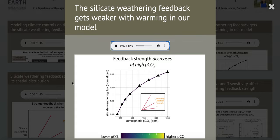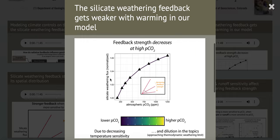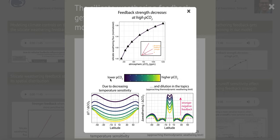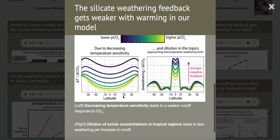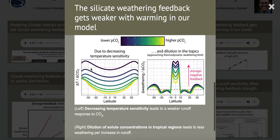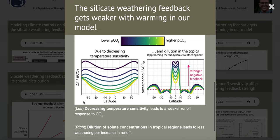Let's look at a very simple case where we increase CO2 in our model and look at how silicate weathering fluxes change. In the top panel, the curve of silicate weathering flux versus CO2 gets shallower at higher levels of CO2, indicating that the strength of the silicate weathering feedback decreases as CO2 increases. We can deconvolve this into two contributions. First, as CO2 increases, the change in temperature per change in CO2 decreases — the yellow line is lower than the dark blue line — indicating temperature becomes less sensitive to atmospheric CO2, which leads to a decrease in the strength of the silicate weathering feedback.